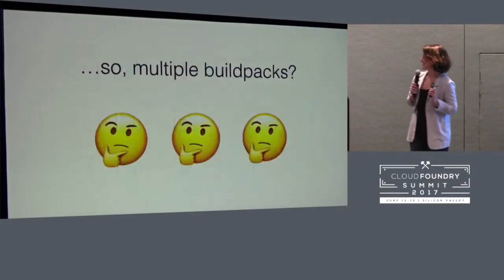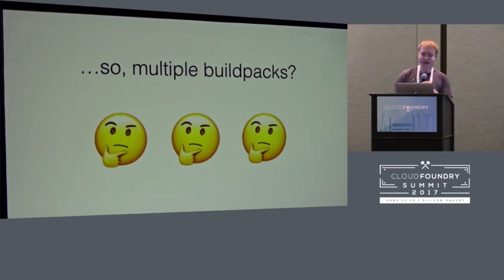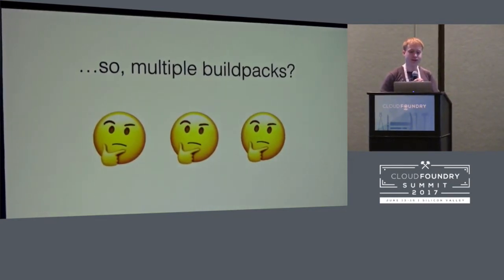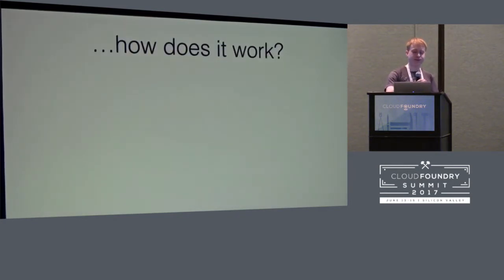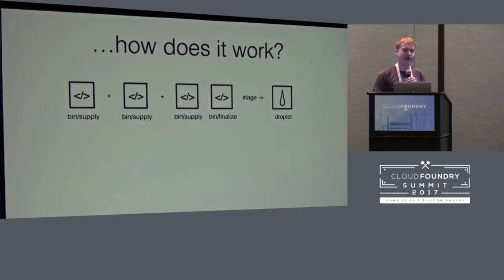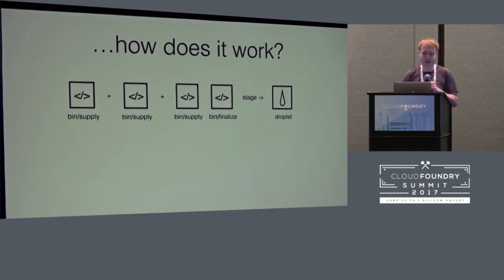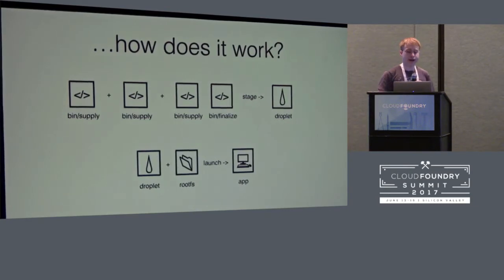So, what does multiple Buildpacks mean? From a user's perspective, it means that you can specify multiple Buildpacks to apply to the same application. We've introduced two new scripts that replace the bin compile script in that contract: bin supply and bin finalize. The order of the Buildpacks is really important. The bin supply script for all the Buildpacks runs in order, and then the bin finalize script for the last Buildpack runs — and that's how a droplet is staged. You combine that droplet with the root file system and get a running application.